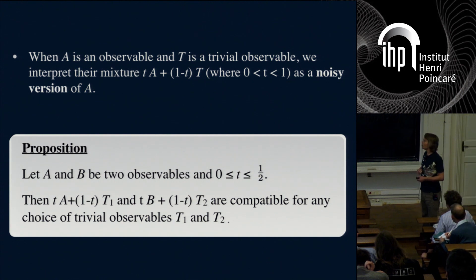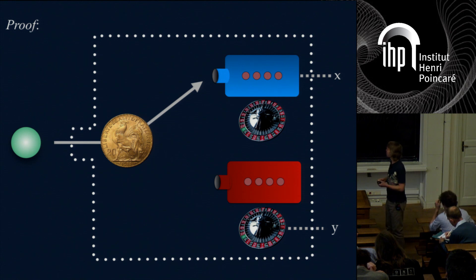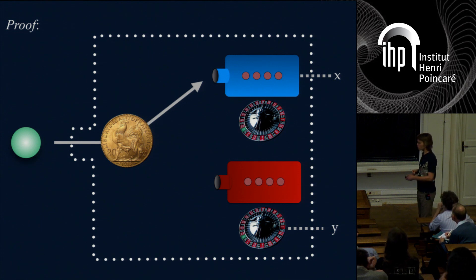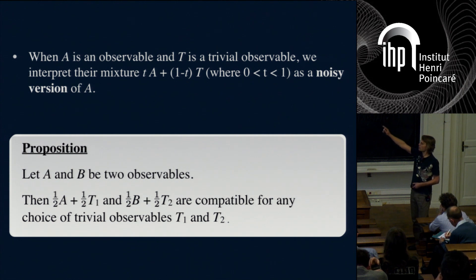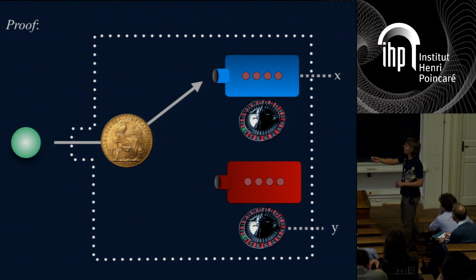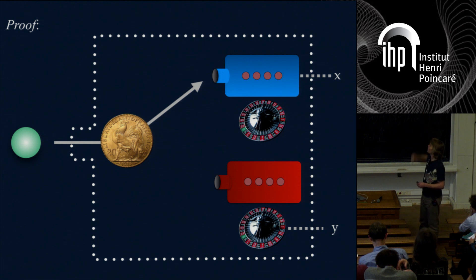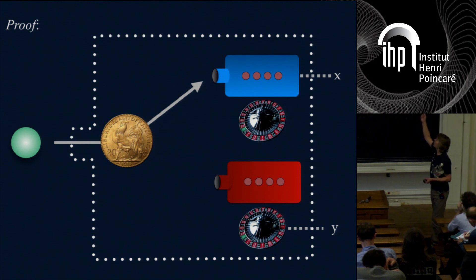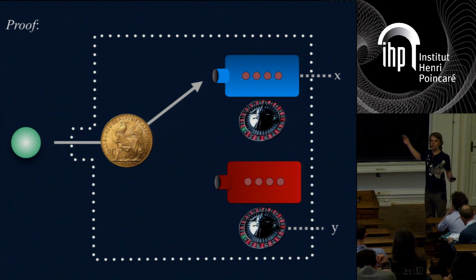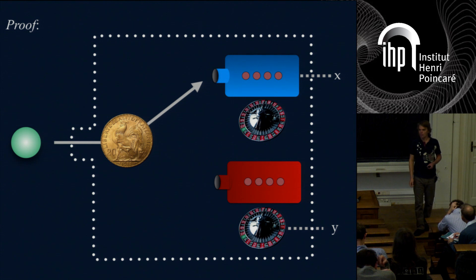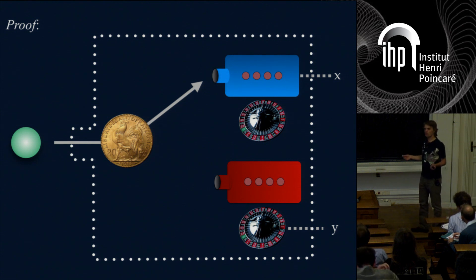The proof of this statement is very simple—we can just draw pictures. How would you write the joint observable? We want to produce noisy versions: A mixed with T₁ and B mixed with T₂. We get an input state, toss a coin—should we measure A (blue box) or B (red box)? Say we measure the blue box. We can no longer measure the red box because we used the input state for the blue box. But we can produce a trivial outcome. When you calculate what you get, you get exactly those noisy versions.